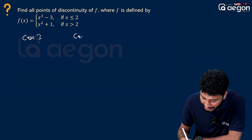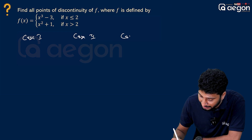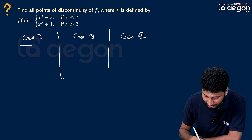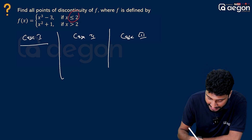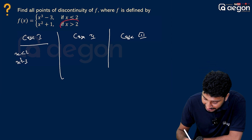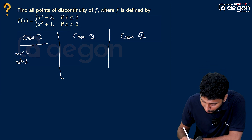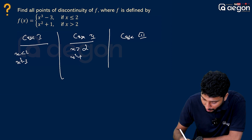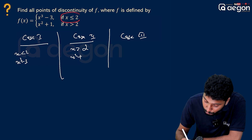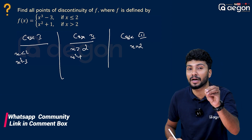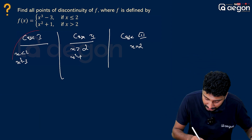Case 1, case 2, case 3. Case 1: x is less than 2, function is x³ minus 3. Case 2: x is greater than 2, function is x² plus 1. Case 3: x is greater than 2 — that is, 2 is less than x ≤ 2. When x is equal to 2.